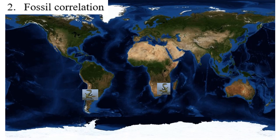Just think how this could be possible — we could not say that Mesosaurus evolved in one location and then traveled across the ocean. It was a freshwater reptile and could never have made the journey through the salty Atlantic Ocean. Wegener concluded that during the time when Mesosaurus thrived, Africa and South America were not separated by an ocean but were connected as one landmass where Mesosaurus could freely move.